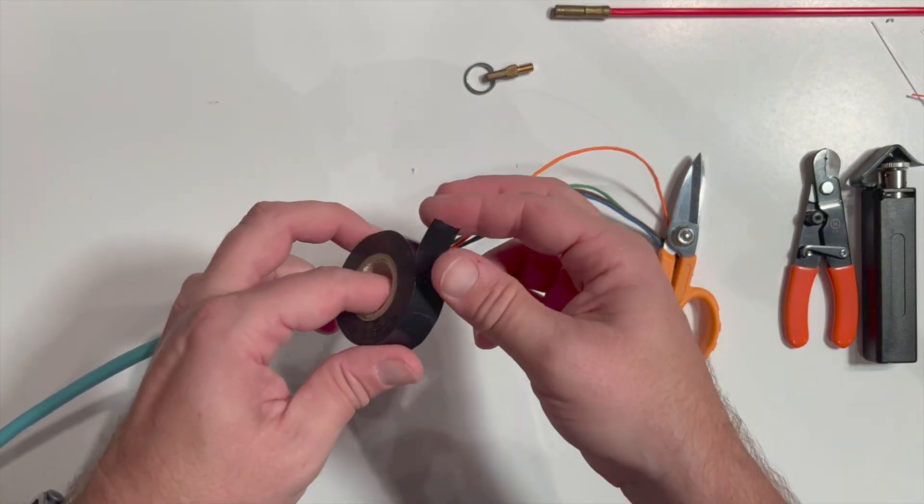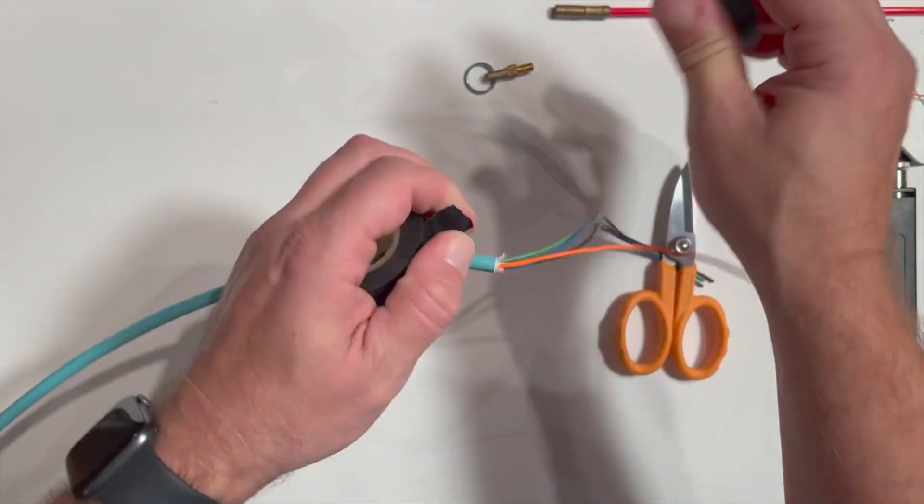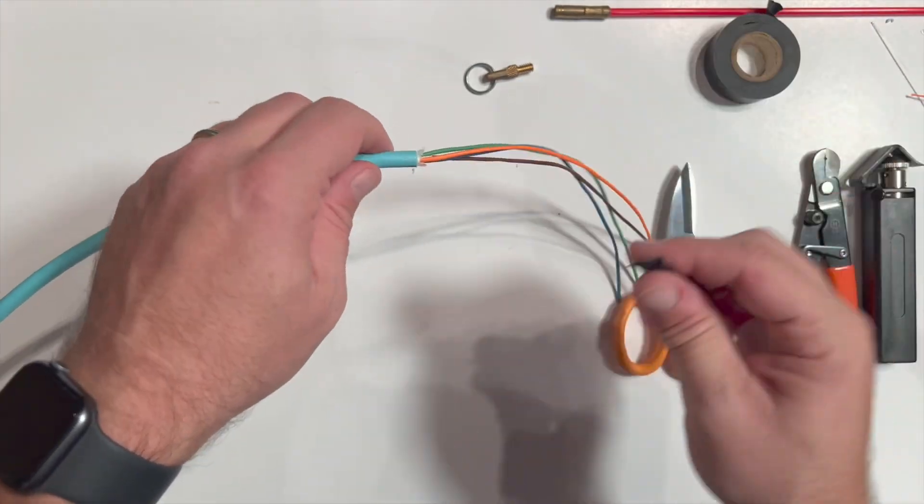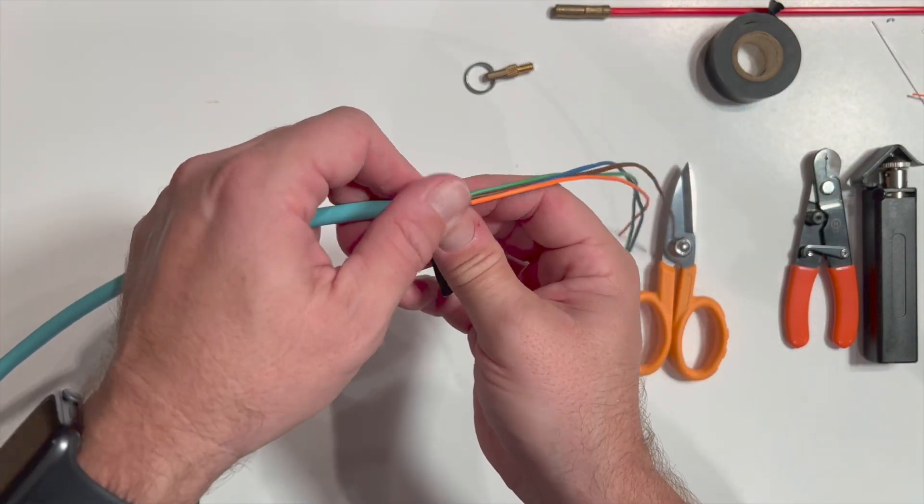At this point, it's recommended that you apply electrical tape around the end of the outer jacket in order to provide a taper to the jacket, making it easier to install.